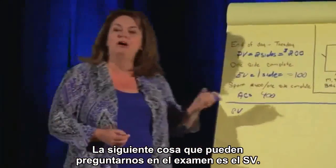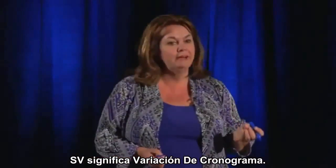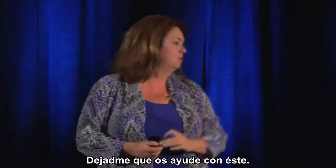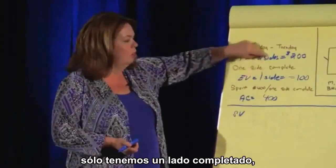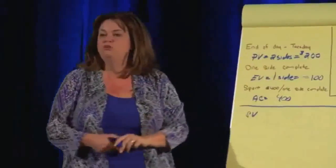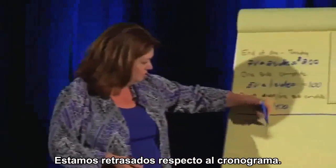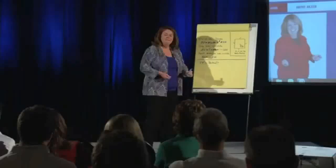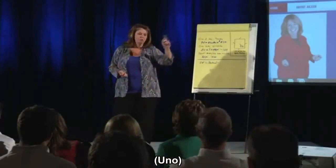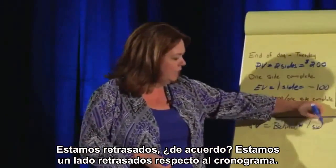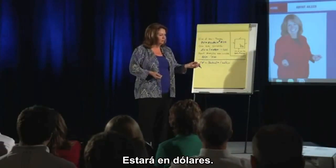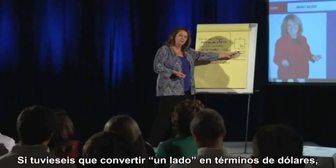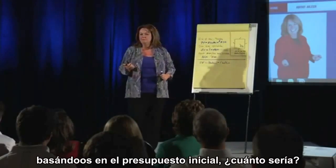The next question on the exam might ask about Schedule Variance (SV). It's the end of Tuesday — we should have two sides complete but only have one. We're behind schedule by one side. Converting that to dollars based on the original budget, that's one hundred dollars behind.